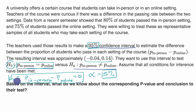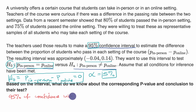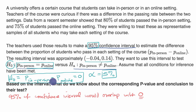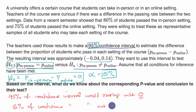Think about it this way: we assume the null hypothesis is true. When we construct a 95% confidence interval, we would expect that 95% of confidence intervals would overlap with zero — where zero comes from the null hypothesis that the true difference in proportions is zero. Conversely, 5% of confidence intervals would not overlap with zero.